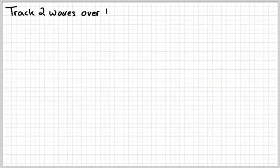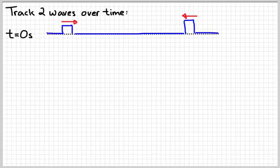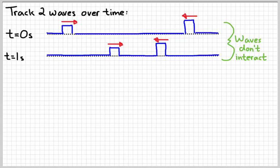What we're going to do is track two waves over time. The dashed line represents equilibrium. Here are two waves which are traveling in opposite directions. I'm going to draw boxy waves just to make it easier to draw. At one second, the two waves would be here and here, and nothing particularly interesting is happening right now, because the waves aren't superimposed yet — they don't interact with each other at all.